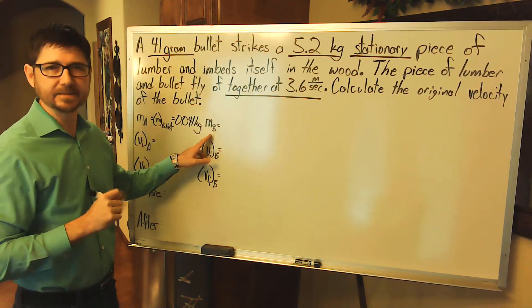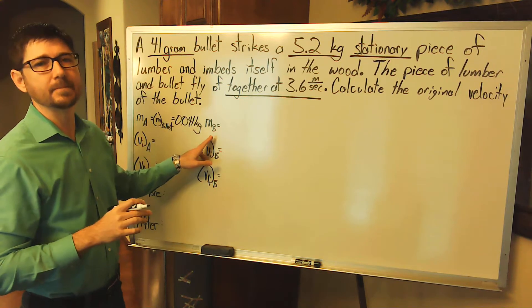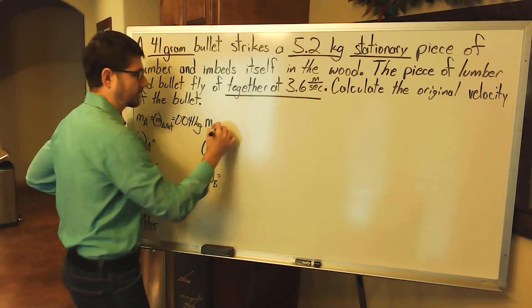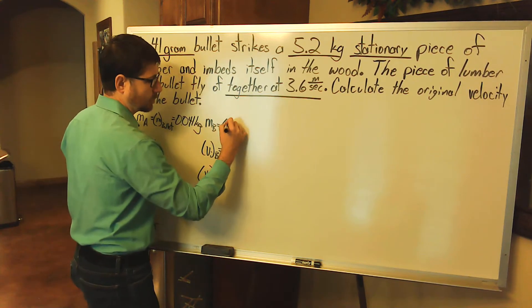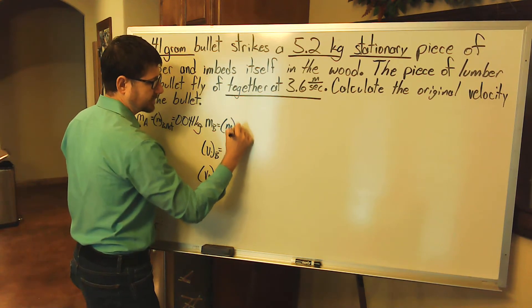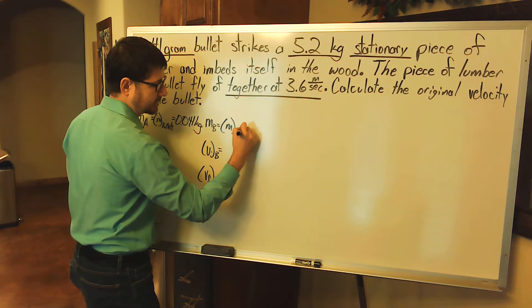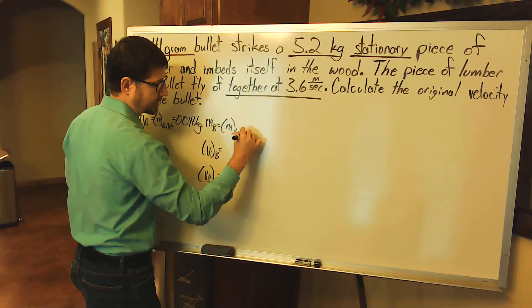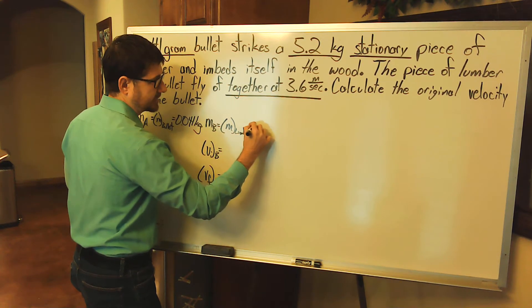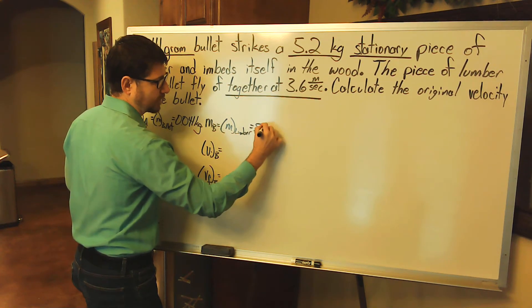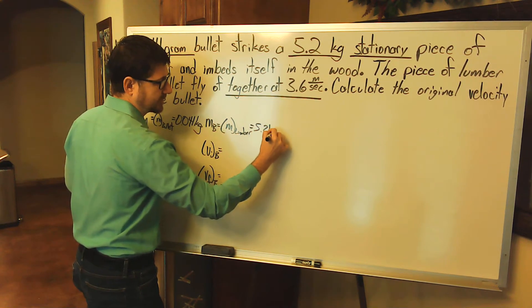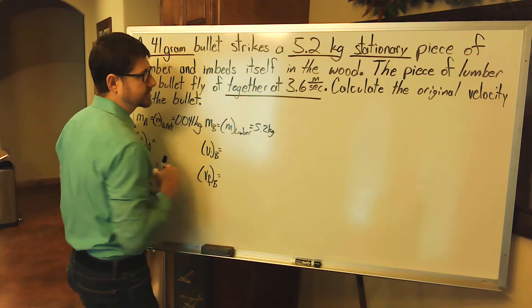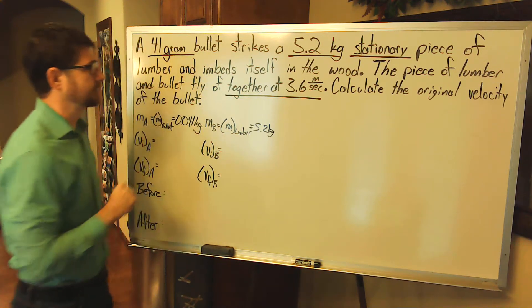Mass b is going to be the mass of the lumber. I want to be more specific and say m sub lumber. This is 5.2 kilograms.